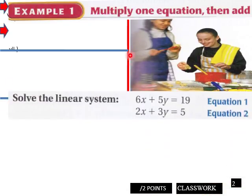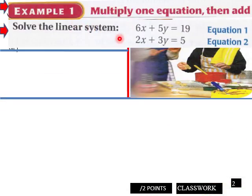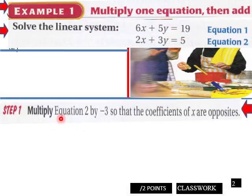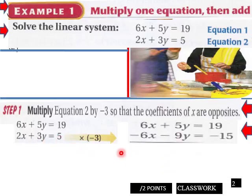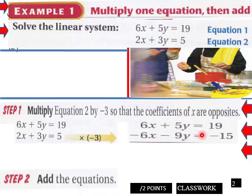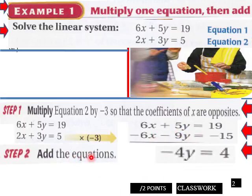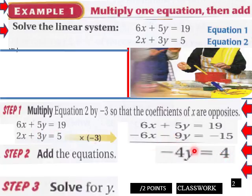Okay, example one. Multiply one equation and then add it to solve the system. We have these two systems here. Multiply equation 2 by negative 3. So we're going to multiply this by negative 3. Then we combine those. So that's what we do. We're going to multiply that by negative 3 now. So now we can combine our x's to those that go away. And then we have this negative 4y equals 4. We went from here to here to get this here.